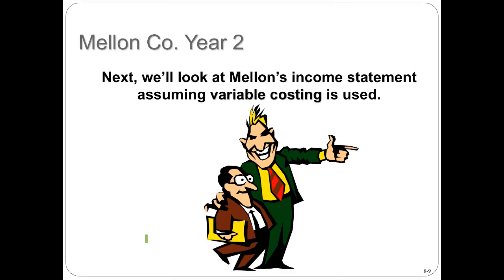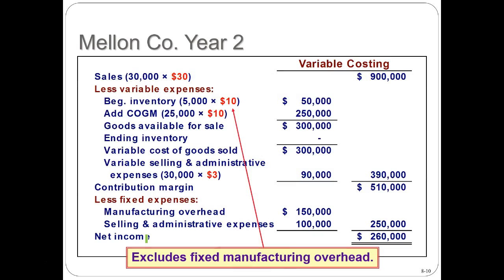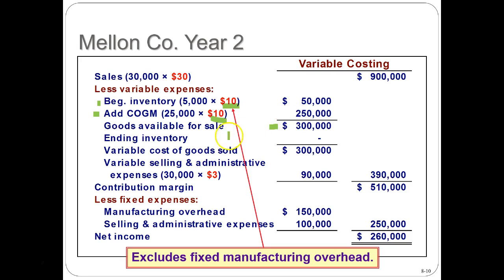Next, let's look at Mellon's income statement assuming variable costing is used. Sales are the same: 30,000 times $30. We subtract variable expenses. Beginning inventory is 5,000 times $10 — that lower number because it excludes the fixed manufacturing overhead — giving $50,000. Add cost of goods manufactured: 25,000 times $10 gives $250,000. The $50,000 plus $250,000 gives $300,000 cost of goods available for sale. There is no ending inventory, so cost of goods sold is $300,000.